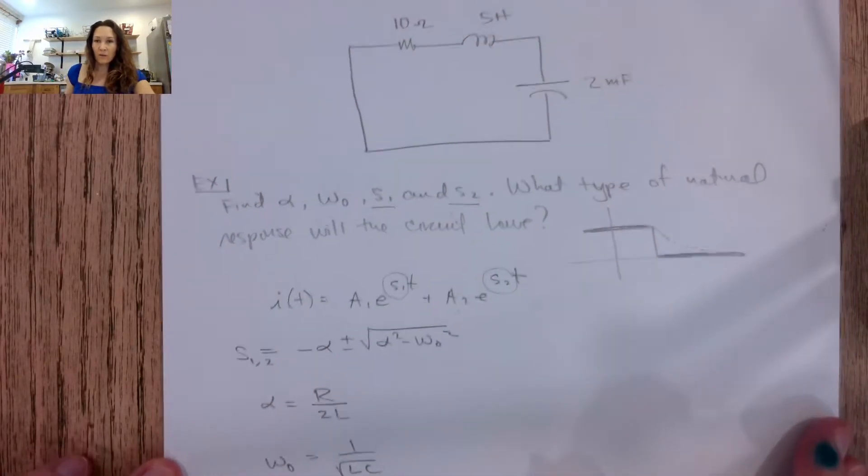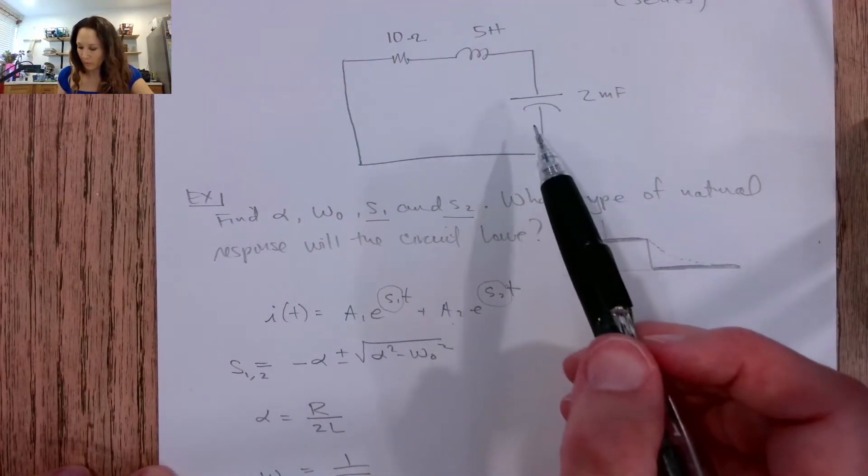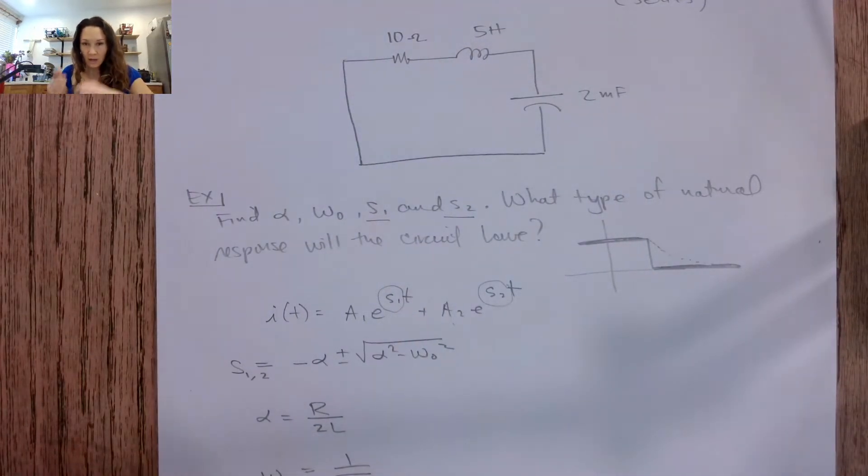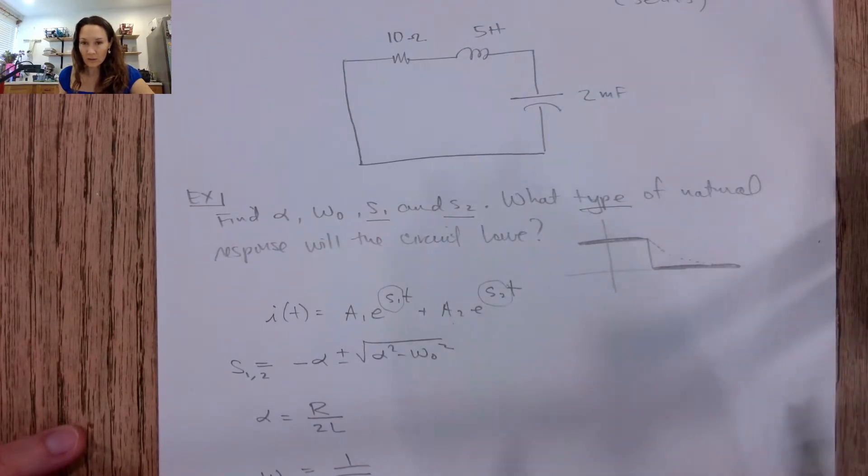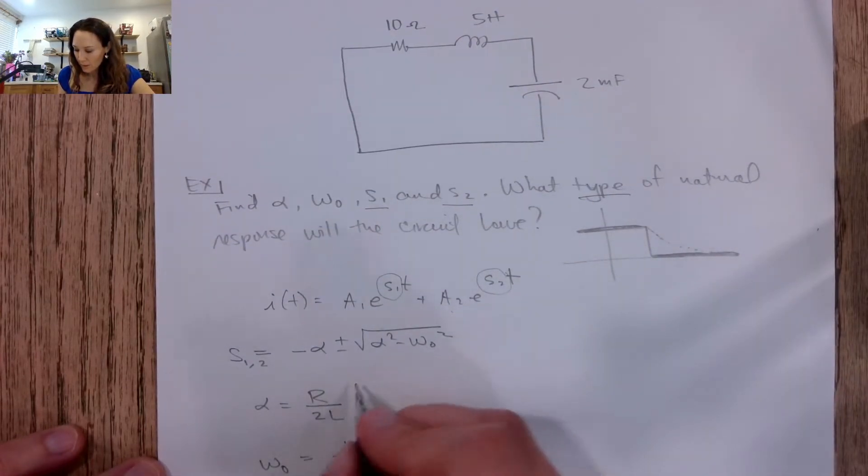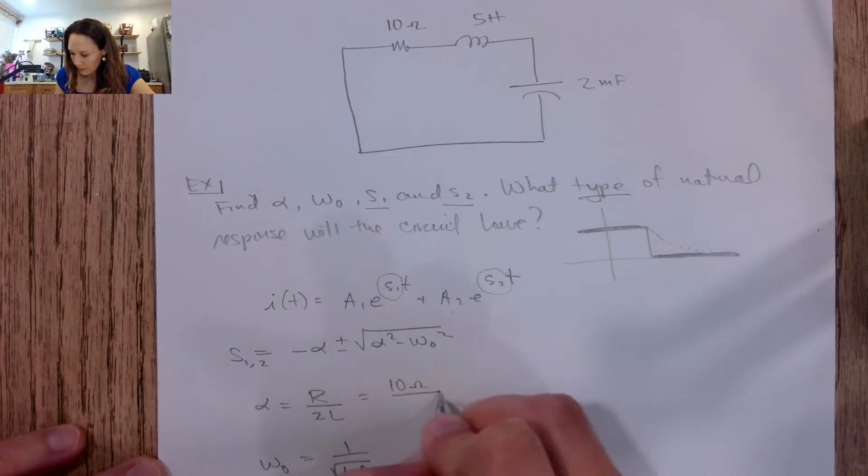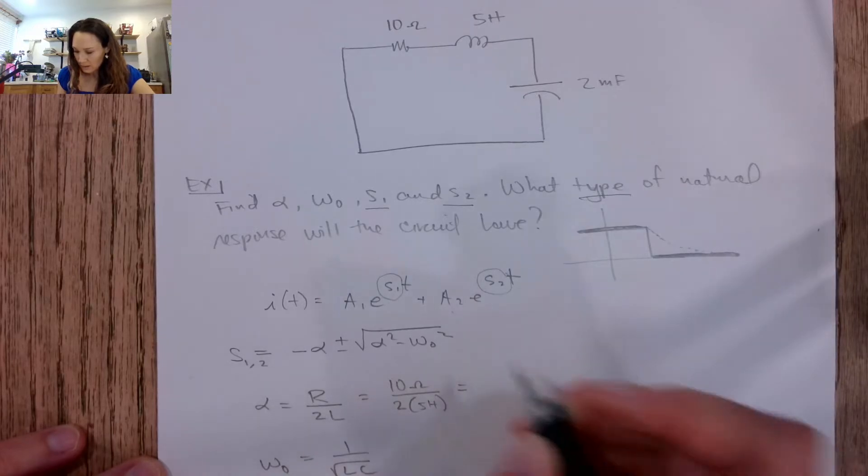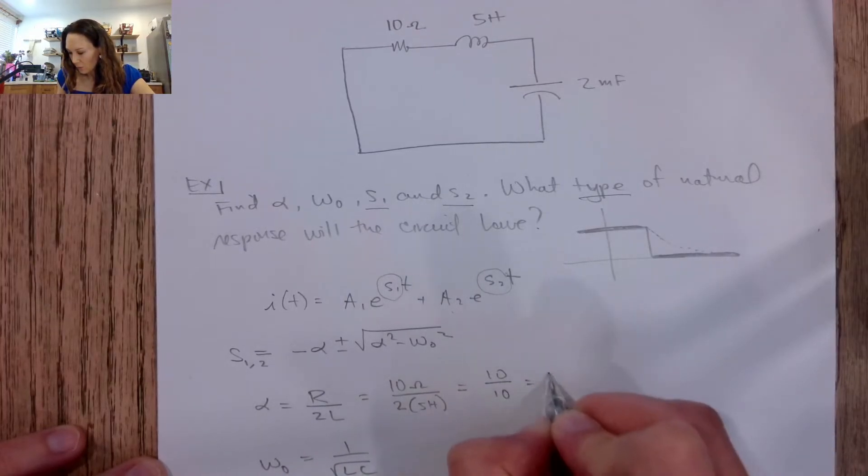Okay, so for this particular example, the first thing we do when we sit down to a problem like this is we should compute alpha and omega naught, because once we have those, we'll be able to figure out what type of natural response this circuit's going to have. So if I put in the values here, my resistor is 10 ohms over 2 times 5 henrys, this gives me an alpha of 10 over 10 or 1.